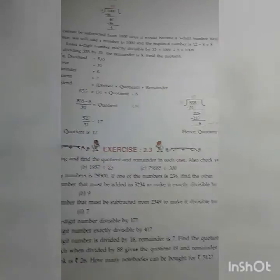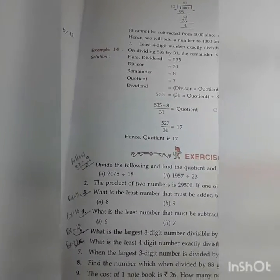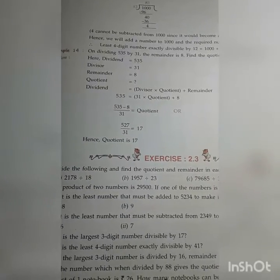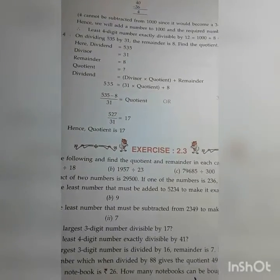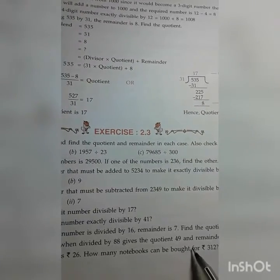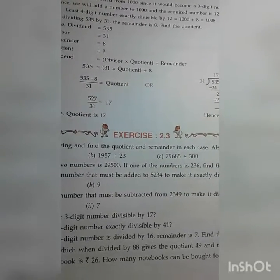Then comes to number eight. Find the number which when divided by 88 gives the quotient 49 and remainder 7.